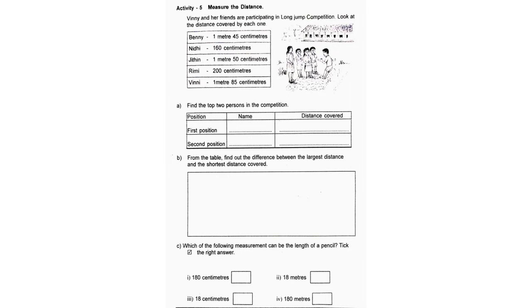Activity 5: Measure the distance. Vinny and her friends are participating in a long jump competition. Distance covered by each: Benny 1 m 45 cm, Nidhi 160 cm, Jitin 1 m 50 cm, Rimi 200 cm, Vinny 1 m 85 cm. A. Find the top two persons in the competition. First position: Rimi, 200 cm. Second position: Vinny, 1 m 85 cm.